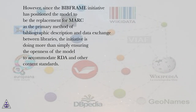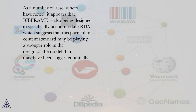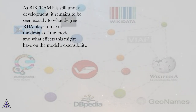However, since the BIBFRAME initiative has positioned the model to be the replacement for MARC as the primary method of bibliographic description and data exchange between libraries, the initiative is doing more than simply ensuring the openness of the model to accommodate RDA and other content standards. Per the initiative, the designers are planning on taking an active look at the elements in RDA and other content standards, including the Anglo-American Cataloging Rules, Second Edition (AACR2). As a number of researchers have noted, it appears that BIBFRAME is also being designed to specifically accommodate RDA, which suggests that this particular content standard may be playing a stronger role in the design of the model than may have been suggested initially. As BIBFRAME is still under development, it remains to be seen exactly to what degree RDA plays a role in the design of the model and what effects this might have on the model's extensibility.